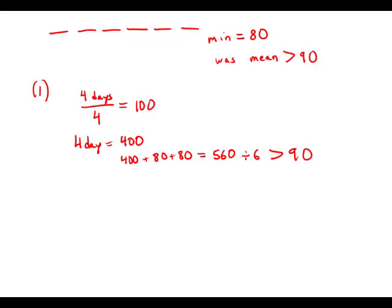So even if the last two days are minimum, the value of the mean for the six days would be over 90. So this statement by itself is sufficient.